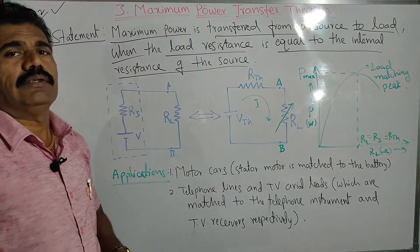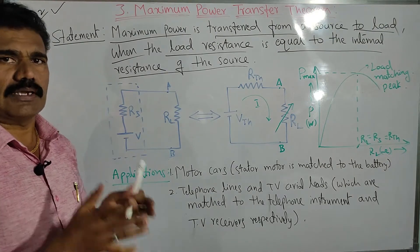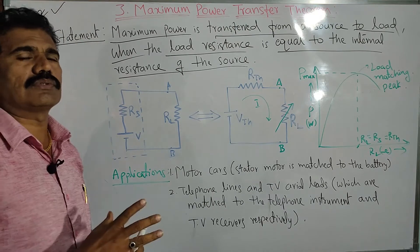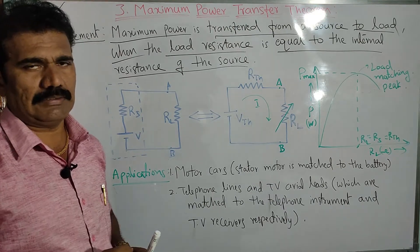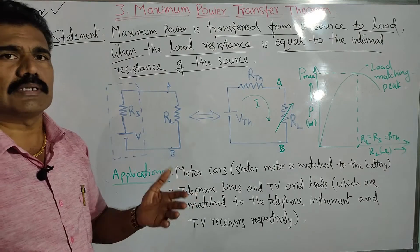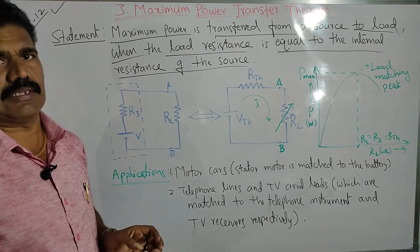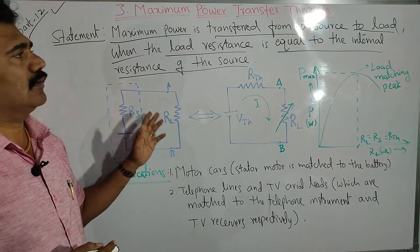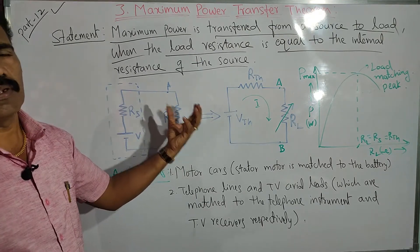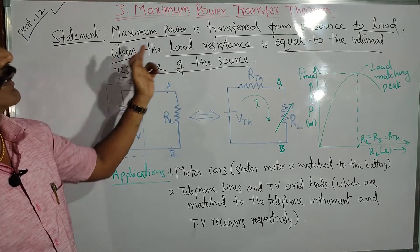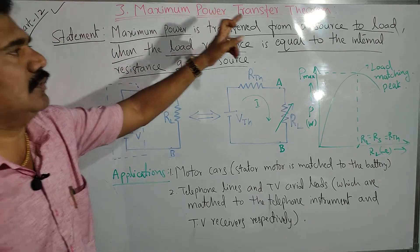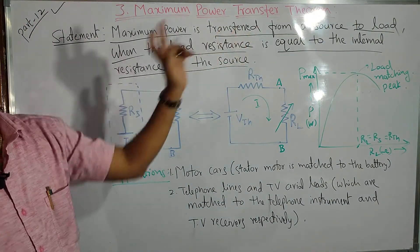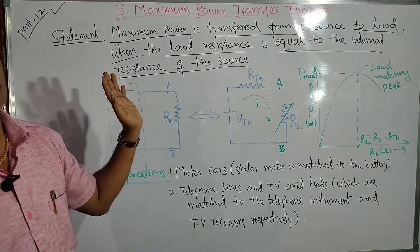You have to assume that if you consider any voltage source or current source, you have to consider what is its internal resistance. All sources will have certain internal resistance. In case of a voltage source, internal resistance is very small; in case of a current source, internal resistance is very high. Whatever may be the type of source, in order to extract the maximum power from the source, the condition is the internal resistance of the source must be equal to the load resistance. That is the statement.